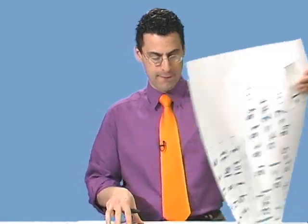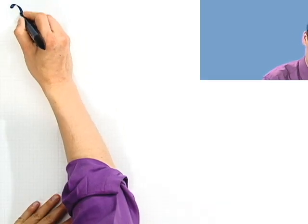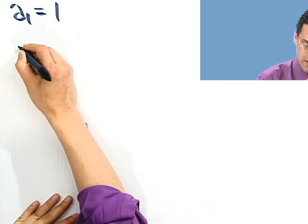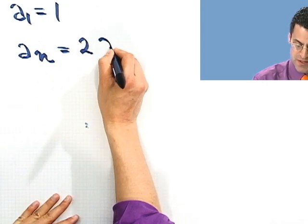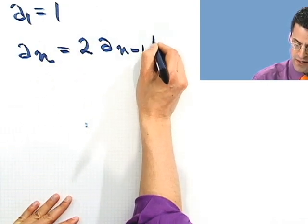Sometimes sequences require the previous members of the sequence to figure out the next member. So for example, suppose I tell you that another sequence has its first term a₁=1, and then to get its nth term, you take 2 times the previous term and you add 1.